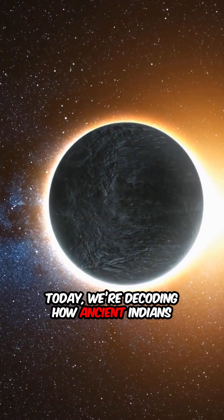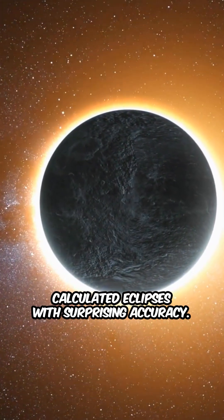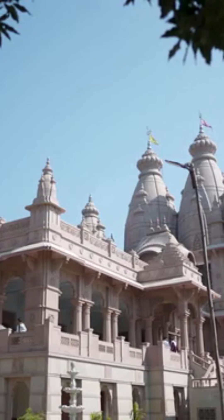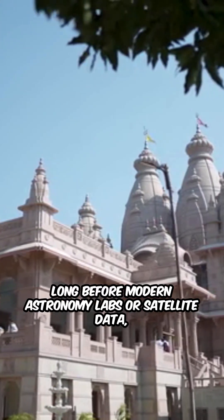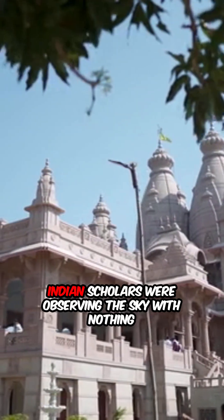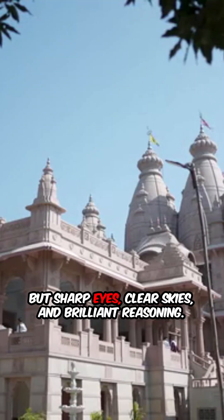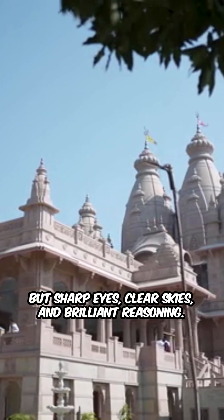Today, we're decoding how ancient Indians calculated eclipses with surprising accuracy. Long before modern astronomy labs or satellite data, Indian scholars were observing the sky with nothing but sharp eyes, clear skies, and brilliant reasoning.